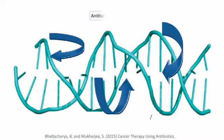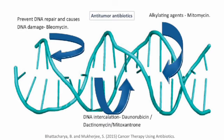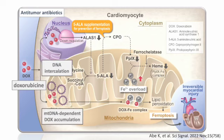Antitumor antibiotics operate by inducing DNA damage in cells, inhibiting their proliferation. For example, doxorubicin intercalates between neighboring DNA base pairs. Additionally, it disrupts topoisomerase-mediated DNA repair.